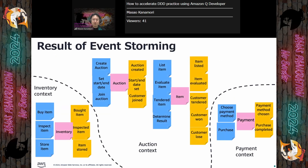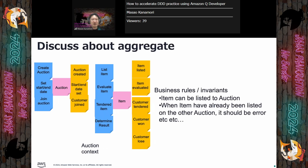Let's start from the result of event storming. This is a fictional auction web application as a sample. After event storming, we can find candidate aggregates as pink sticky notes, commands as blue sticky notes, and events as orange sticky notes. As the final step of event storming, we discuss what business rules those aggregates should have. There are simple business rules like: an item can be listed to auction, and when an item has already been listed on another auction, it should be an error. In the real world there are more complex rules, but as a starting point, this may be enough. Small start is a good idea when starting something new.